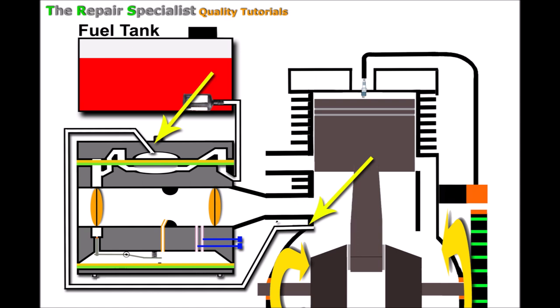So in a nutshell, the pulse line is a pipe that allows constant flow connection from the crankcase to the carburetor. So that's what it is, and now let's take a look at how it works.